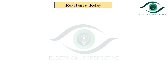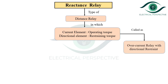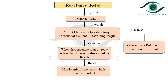Let us start with the introduction. The reactance relay is a type of distance relay in which the current element provides the operating torque and the directional element provides the restraining torque. It is also called an overcurrent relay with directional restraint. It operates when the reactance seen by the relay is less than the preset value called the reach, which is the maximum length of the line up to which the relay can protect.